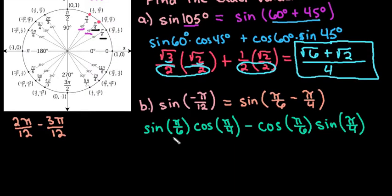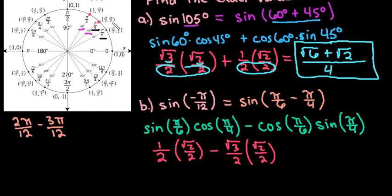So now if we simplify, sine pi over 6, if we look for this one, sine pi over 6 is going to be the 1 half. Cosine pi over 4 is going to be square root 2 over 2. And then we're going to subtract from that the cosine of pi over 6. So the cosine of pi over 6 is square root 3. So the sine of pi over 4 ends up being square root 2 over 2. So remember that I'm just looking at cosine, sine, and I'm just plugging those values in.